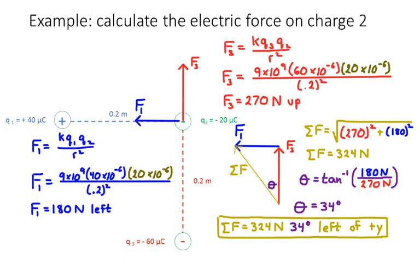So I would write that the net force on this particular charge is 324 newtons, 34 degrees left of the positive y direction or left of up. If you drew your vectors in the opposite manner, like drawing the blue one and then the red one, you would just get the congruent angle. It's like 66 degrees up from negative x or left. So it doesn't matter how you draw it, just make sure you draw them tip to tail.